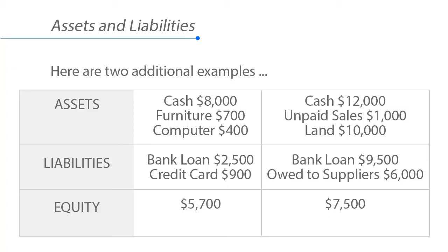Second example: we have cash of $12,000, unpaid sales of $1,000 — so the sale is made but not yet paid, it still is an asset — and we have land worth $10,000, totaling $23,000 in assets. We have a bank loan of $9,500 and $6,000 owed to suppliers for total liabilities of $15,500. Subtracting $15,500 from $23,000, we have total equity of $7,500.